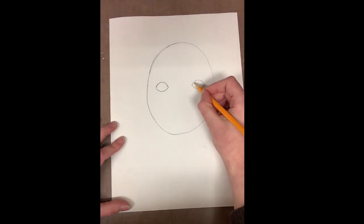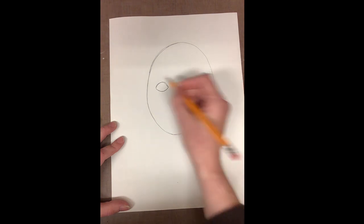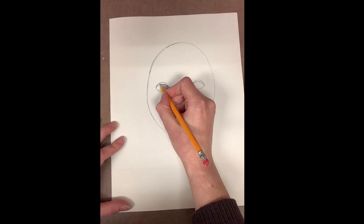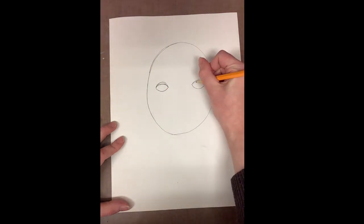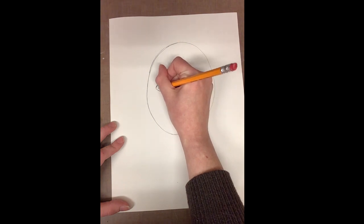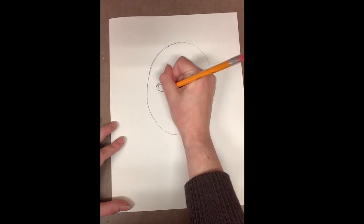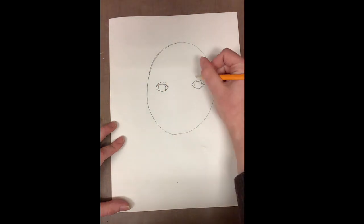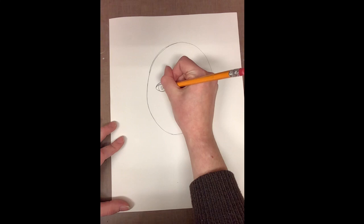Underneath the top line of my eye shape, I'm going to make another line that exactly mirrors it. This is going to create the eyelid above your eye. Next I'll draw two circles in my eyes. One circle will be larger which is the iris or the colored part of my eye, and then the second circle will be smaller which will be the black part or the pupil of my eye.